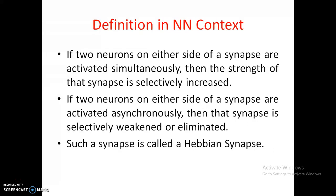If two neurons on either side of a synapse are activated simultaneously, then the strength of that synapse is selectively increased. For example, if two friends are both saying 'hi' at the same time — or within a very small time gap — there is a relation between these two friends, and that relation keeps on increasing if we keep doing the same thing.